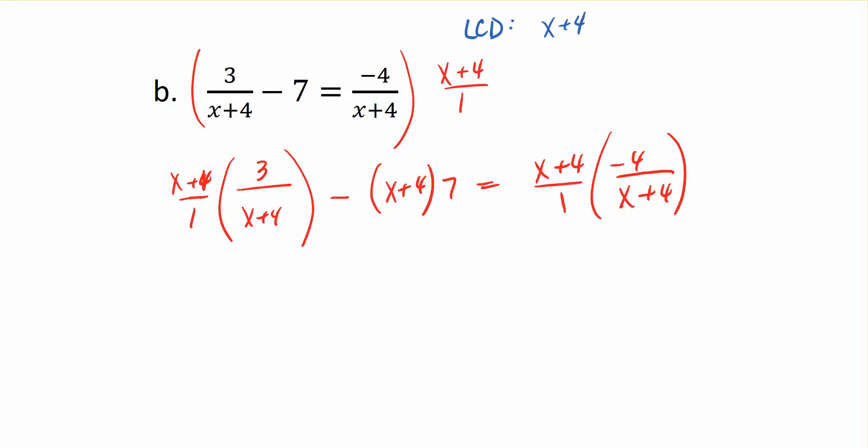Coming back and simplifying this product here, notice this x plus 4 cancels with this x plus 4, and that just leaves me a 3. Minus, then I have 7 times x plus 4 equals—these two x plus 4s cancel—and that gives me just a negative 4 on the right-hand side. So we went from this rational equation here to just a linear equation at this point.